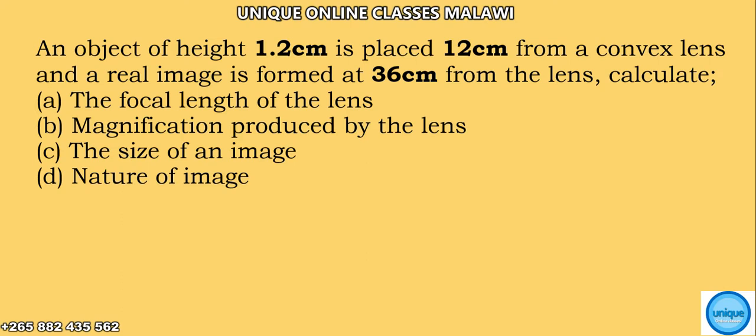Let's see how I can solve this lens problem. The question reads: an object of height 1.2 centimeters is placed 12 centimeters from a convex lens and a real image is formed at 36 centimeters from the lens.